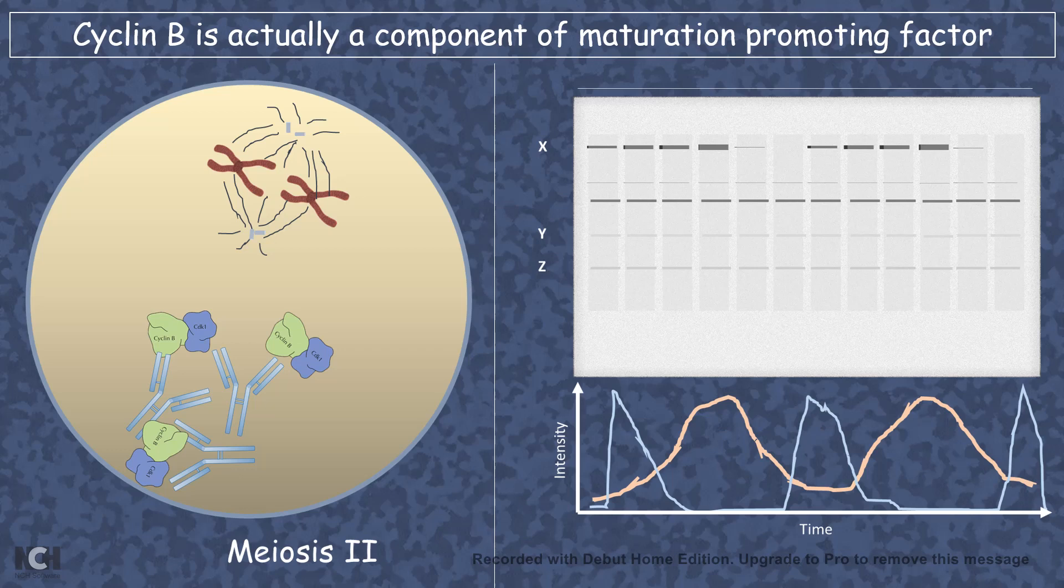The other component of the maturation-promoting factor, which is CDK1, was actually discovered by a geneticist in yeast. So, completely three different model organisms lead to explanation of a biological phenomenon.